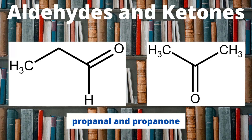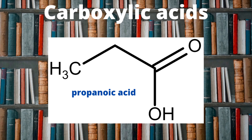If I want to make an aldehyde I need to oxidize a primary alcohol under distillation, and if I want to make a ketone I must oxidize a secondary alcohol under reflux. On screen now is another possible oxidation product but only from primary alcohols or aldehydes — a carboxylic acid like propanoic acid. It's always at the end of the chain, with a carbon atom that's double bonded to an oxygen and that same carbon also single bonded to an OH. I cannot get a carboxylic acid from a secondary alcohol or a ketone.